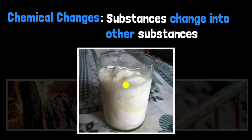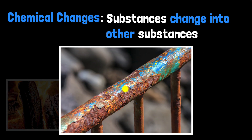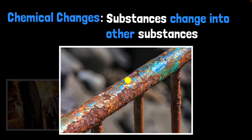When milk goes sour, you get sour milk, which is very different from fresh milk — a new substance. And rusted iron is not iron. So that's what chemical changes are: we get new substances altogether.